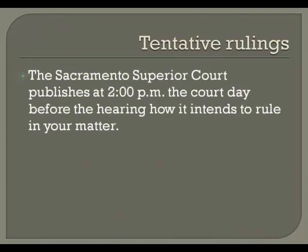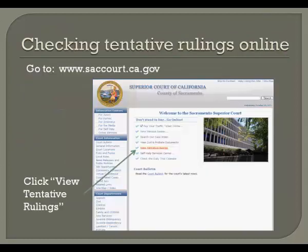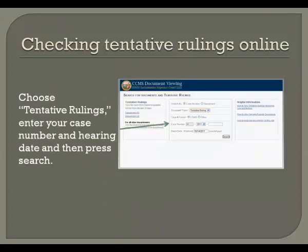Assuming that you have completed all previous steps, your next step will be to check the tentative rulings the day before your hearing. The Sacramento County Superior Court publishes at 2 p.m. the court day before your hearing how it intends to rule in your matter. You may call the court clerk for Department 16 at that time to have the tentative ruling read to you, or you may check online. Go to www.saccourt.ca.gov and click on the link that says View Tentative Rulings from the front page. Choose Tentative Ruling under Document Type, then input your case number, and for the event date, put the date of your name change hearing.